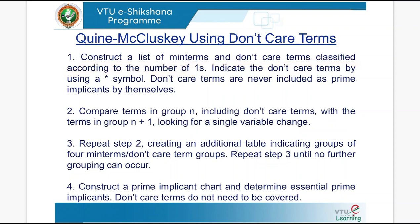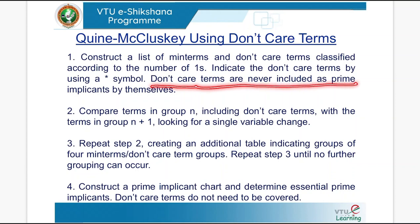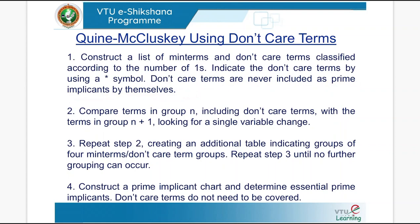One more thing you have to remember is: indicate the don't care terms by using the star symbol. Whichever are the don't care terms, those are to be indicated by the star. And don't care terms are never included as the prime implicants by themselves. The remaining procedure stays the same.